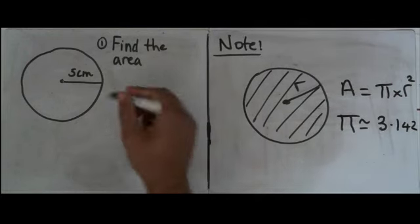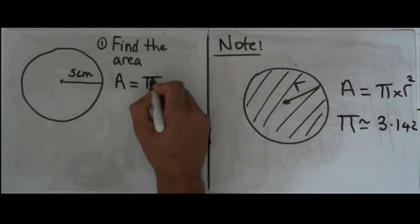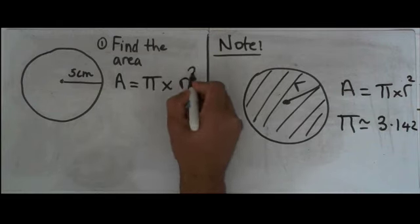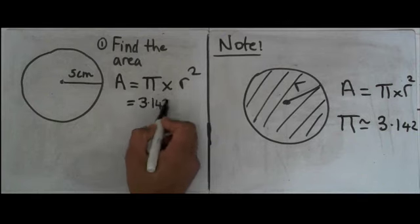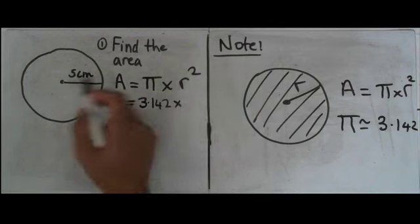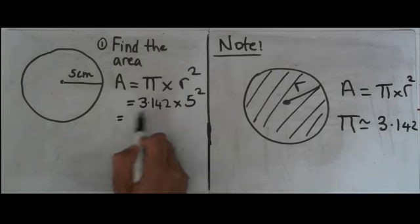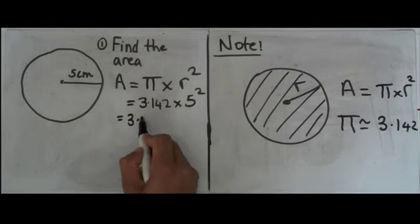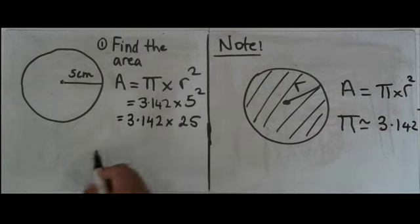So if I use my formula A equals pi times r squared, then I can say that A equals 3.142 times 5 squared. And now 5 squared equals 25, so I've got 3.142 times 25.